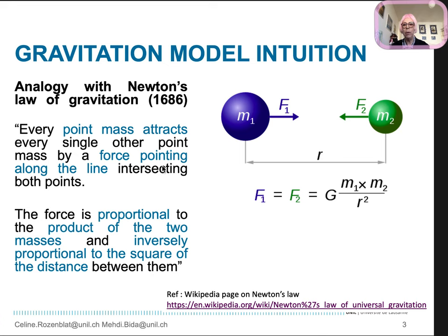The intuition starts with the analogy with the gravitation model of Newton. Regarding the planets, Newton stated that every point mass attracts every single other point mass by a force pointing along the line intersecting both points. The force is proportional to the product of the two masses and inversely proportional to the square of the distance between them. Here the force is symmetric between the two masses.